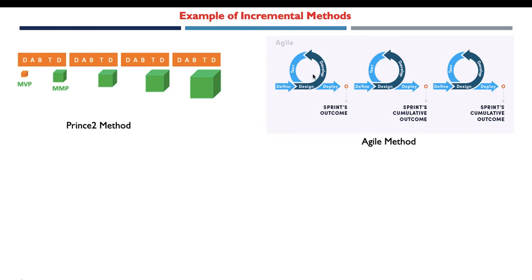Another example of incremental methods is the Agile method. In this method we find sprints, which represent the iterations. At the end of each iteration we find an outcome, and the final release is a cumulative outcome of all the previous outcomes.